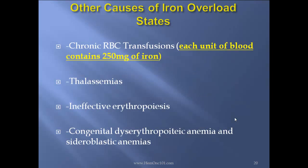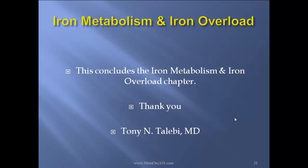Other causes of iron overload states include chronic RBC transfusions — remember, each unit of blood contains 250 milligrams of iron — thalassemias, ineffective erythropoiesis, and congenital dyserythropoietic anemia and sideroblastic anemia. This concludes the Iron Metabolism and Iron Overload chapter. Thank you.